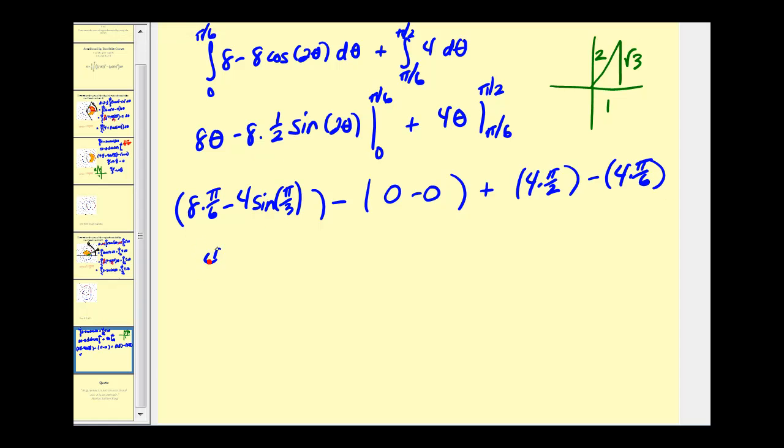So we'll have four pi over three. We'll have four times the sine of pi over three. It's a sixty degree reference angle, so we'll have square root of three over two. Minus zero plus, this will be two pi. And this will be minus two-thirds pi.